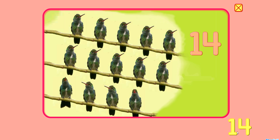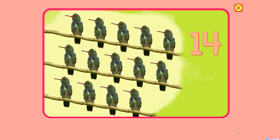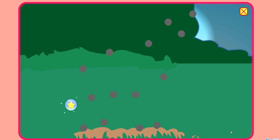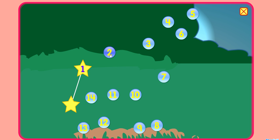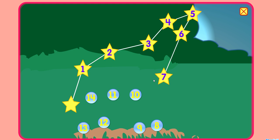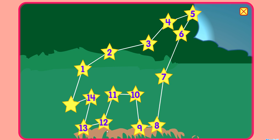Fourteen. Fourteen. Dot to dot. One. One. Two. Three. Four. Five. Six. Seven. Eight. Nine. Nine. Ten. Eleven. Twelve. Thirteen. Fourteen. Fourteen. Woohoo! That was great!